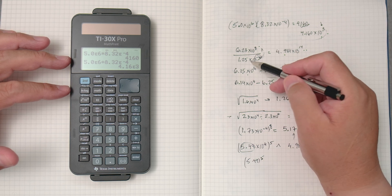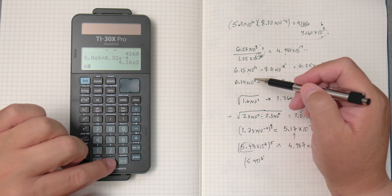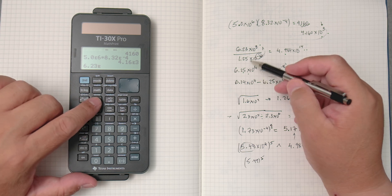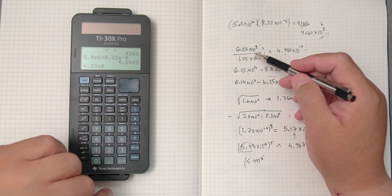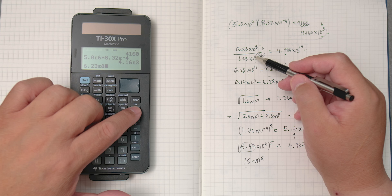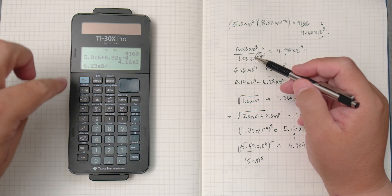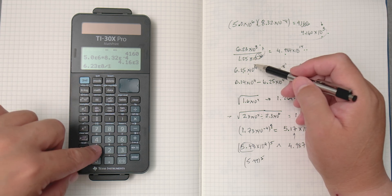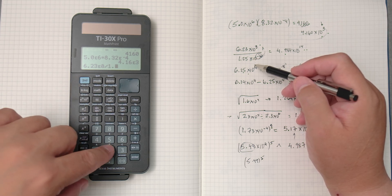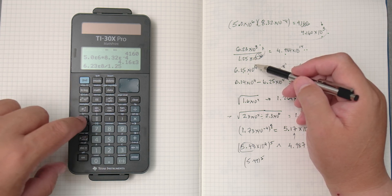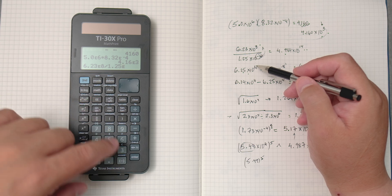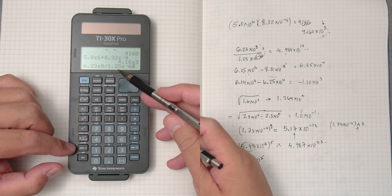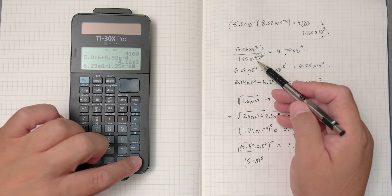Okay, let's do the division. 6.23 to the power, or times 10 to the eighth, right? Divided by. And you don't need to put parentheses, it's pretty smart for doing this simple type of math. 1.25 times 10 to the negative 6, right? Negative 6. 1.25 times 10 to the negative 6, enter.